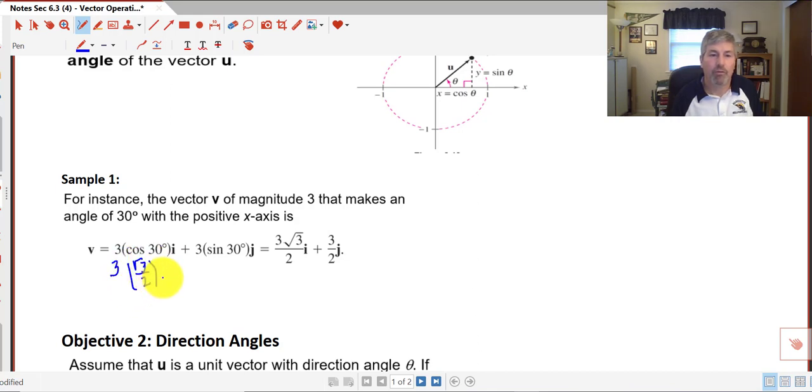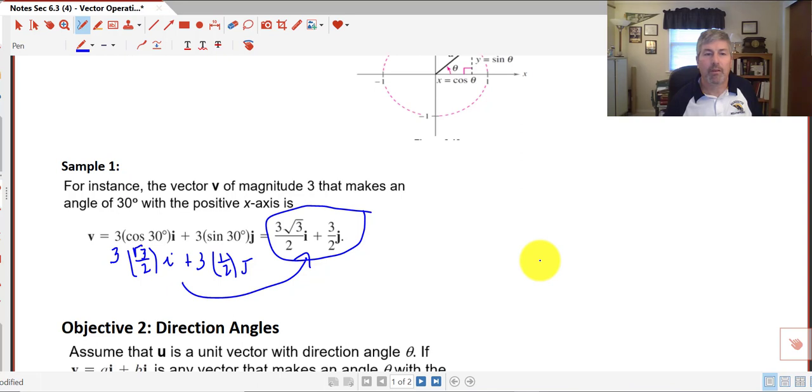And our magnitude of 3 again, and our sine of 30 from our unit circle is 1 half j. So we end up with 3 times square root of 3 over 2 i plus 3 halves j. So just multiplying it out, and we get our vector using our unit circle and the properties of that 30, 60, 90 right triangle.